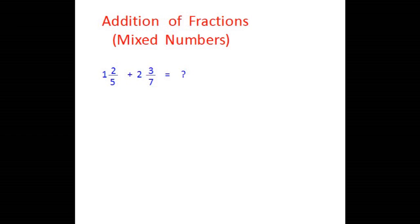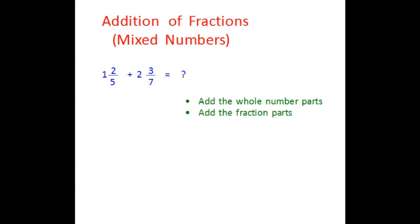Here is an example. We have 1 and 2 over 5, and we have 2 and 3 over 7. Now how can we add these? When you look at the mixed number, you can think of adding the whole number parts and adding the fraction parts separately.